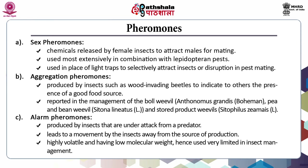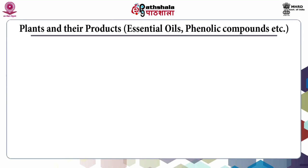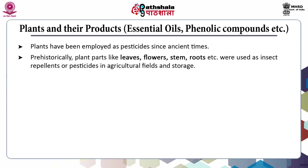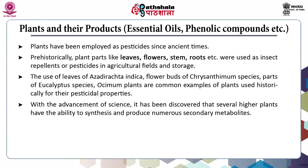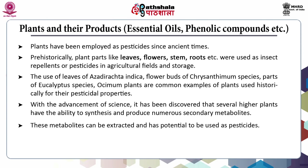Alarm pheromones are used very limitedly in insect management. Coming to the next classification: plants and their products. Plants have been employed as pesticides since ancient times. Prehistorically, plant parts like leaves, flowers, stems and roots were used as insect repellents or pesticides in agricultural fields and storage. The use of leaves of Azadirachta indica (neem tree), flower heads of chrysanthemum species, parts of eucalyptus species and osmium plants are common examples of plants used historically for their pesticidal properties. With advancement of science, it has been discovered that several higher plants have the ability to synthesize and produce numerous secondary metabolites that can be extracted and used as biopesticides.